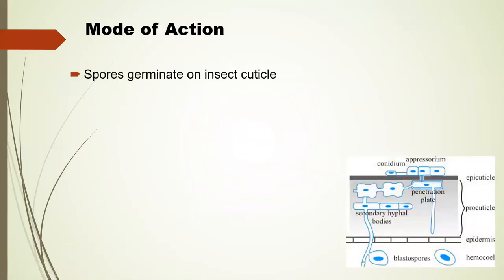The mode of action for all entomopathogenic fungi, regardless of their phylum, starts with a spore germinating on an insect cuticle under the right conditions. Temperature and humidity are the primary drivers. That cuticle could be on the outside of the insect, or the cuticle lining the inside of the buccal cavity where it's nice and moist. Some can enter through the gut, but most don't — the gut is believed to be too low in oxygen, too high in carbon dioxide, and possibly the wrong pH.